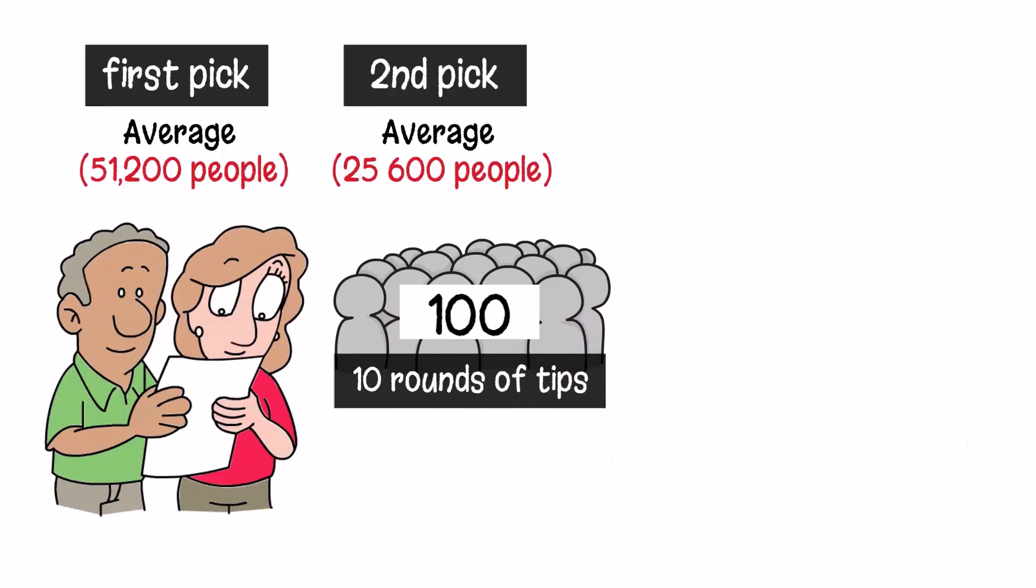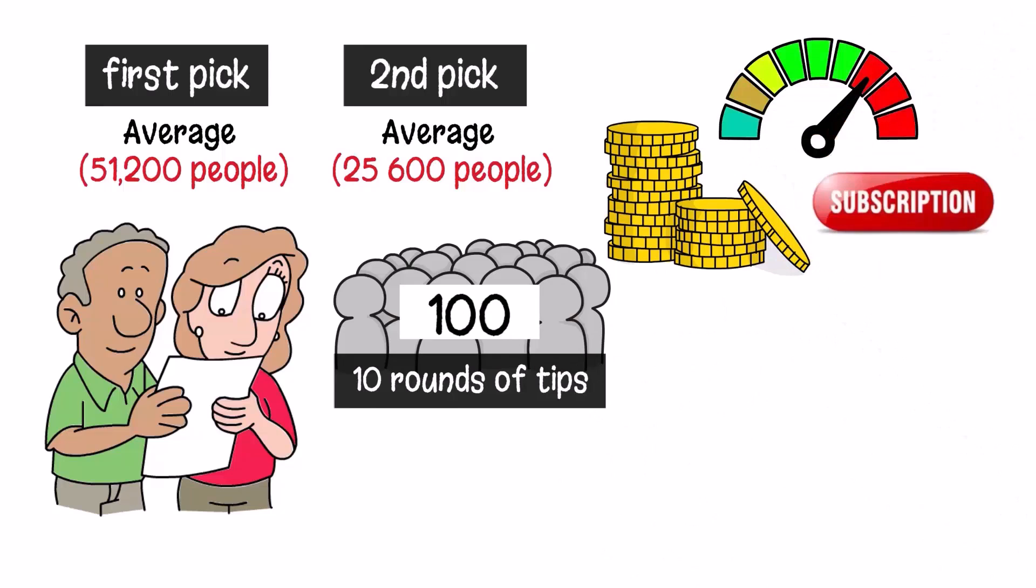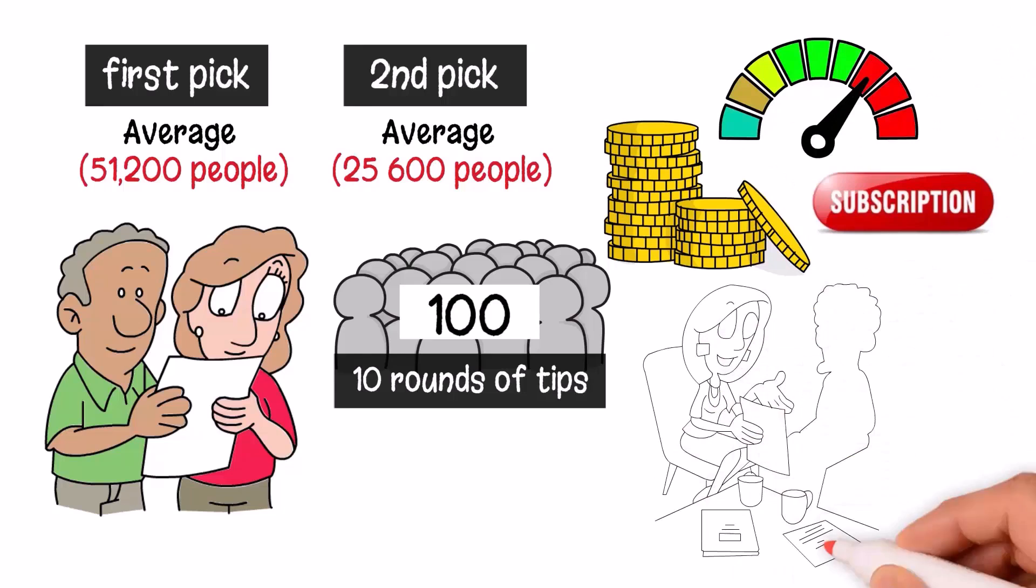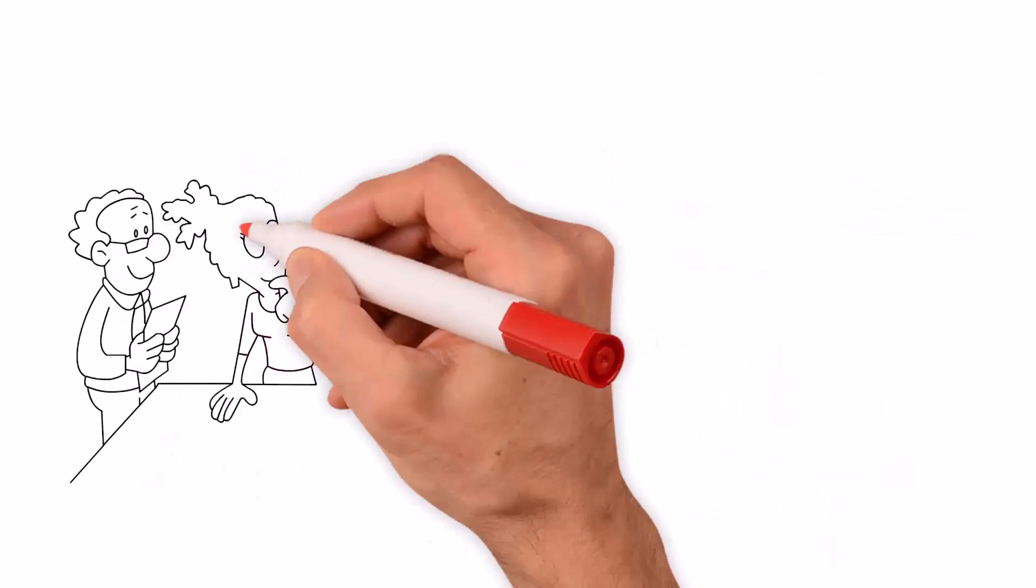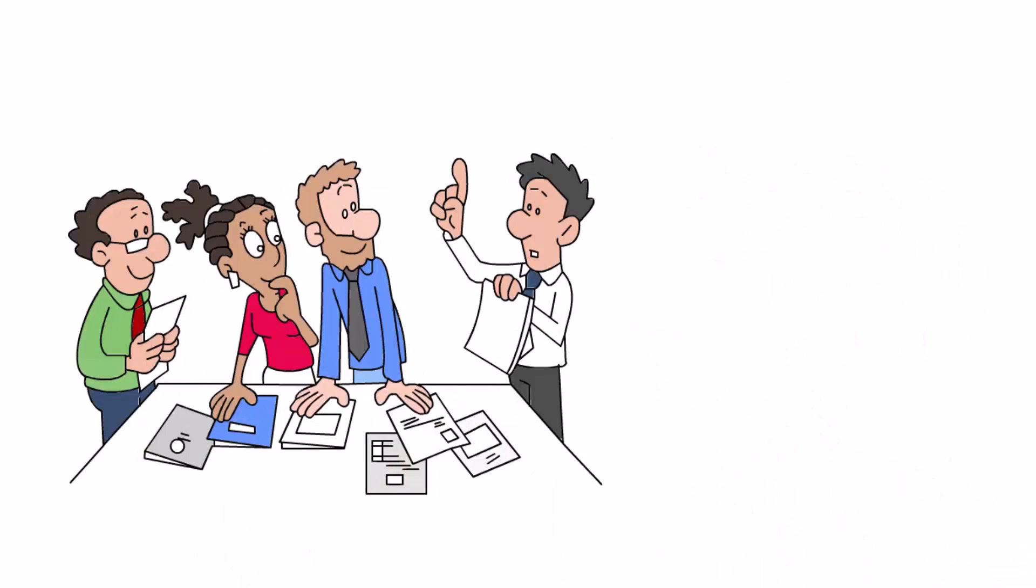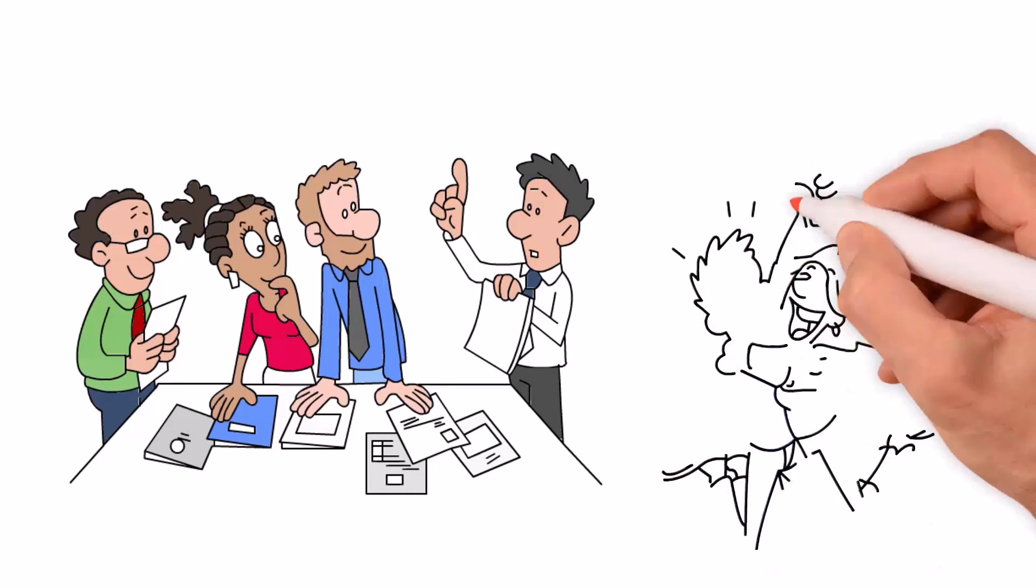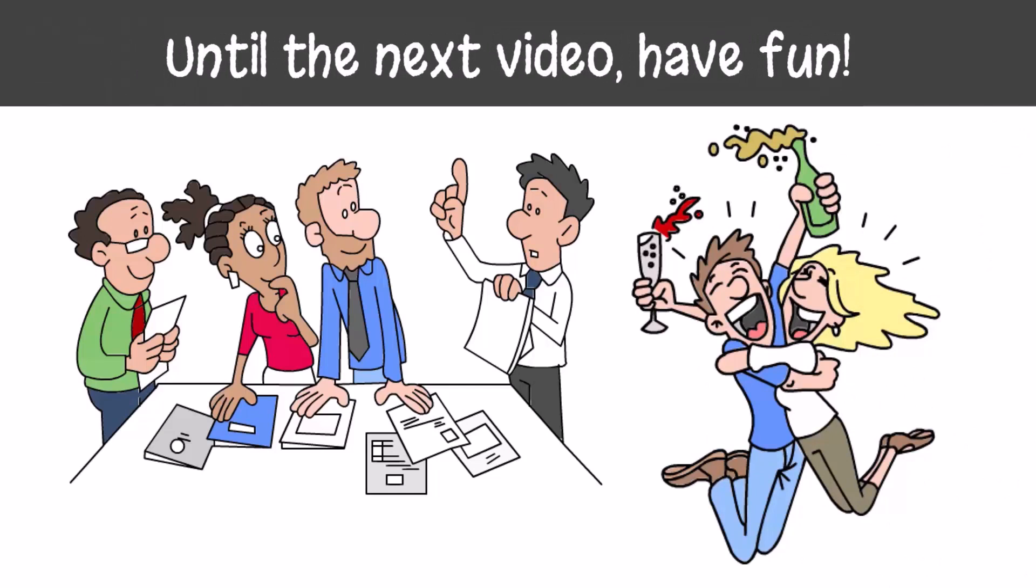The bottom line is that you can seem like a genius if you know how to use statistics on your behalf. When assessing someone's results, judge what was behind the decision and not the actual result. Luck happens, or worse, people know how to seem lucky. Until the next video, have fun!